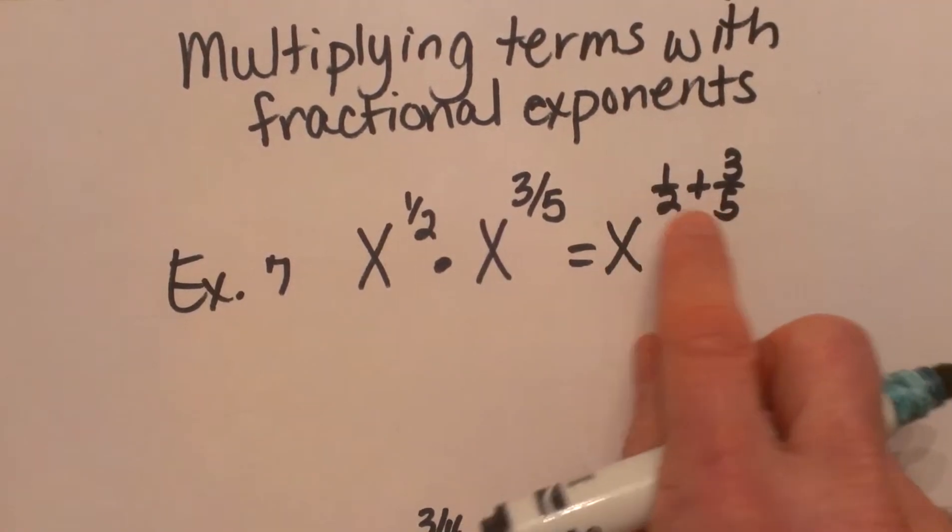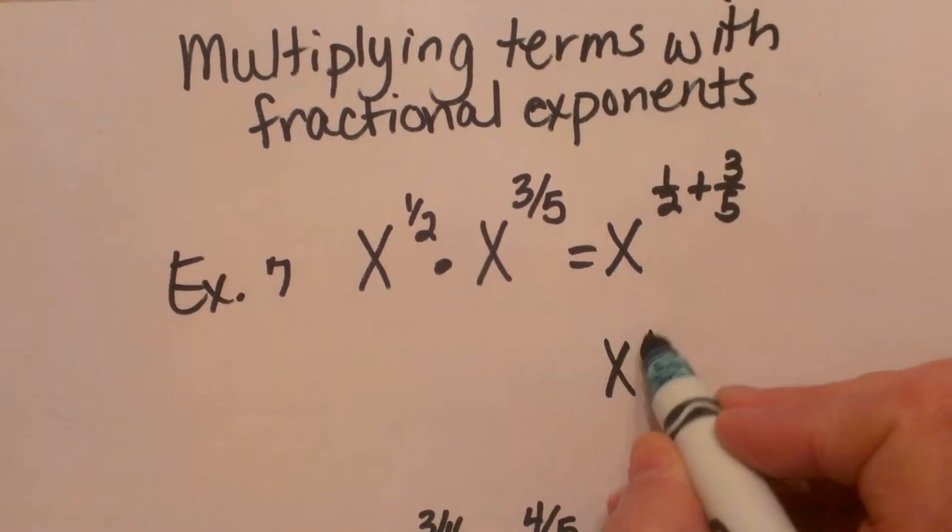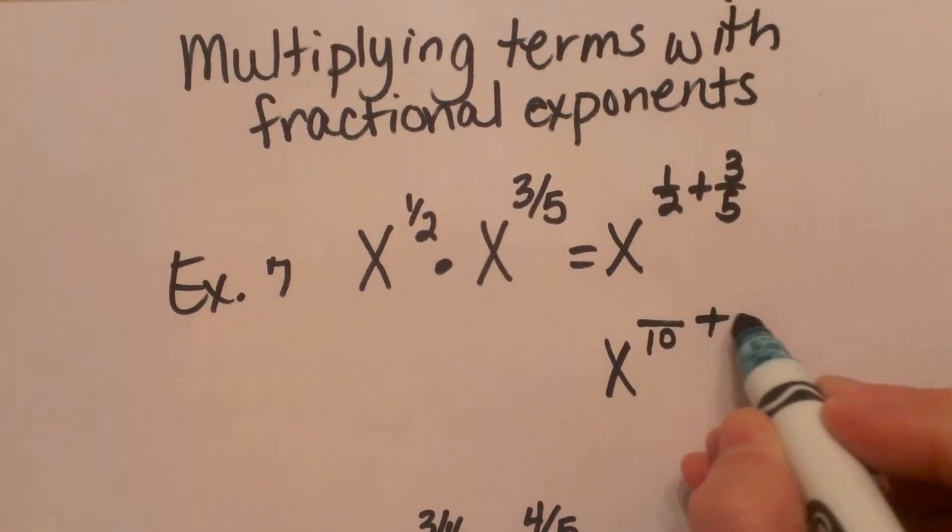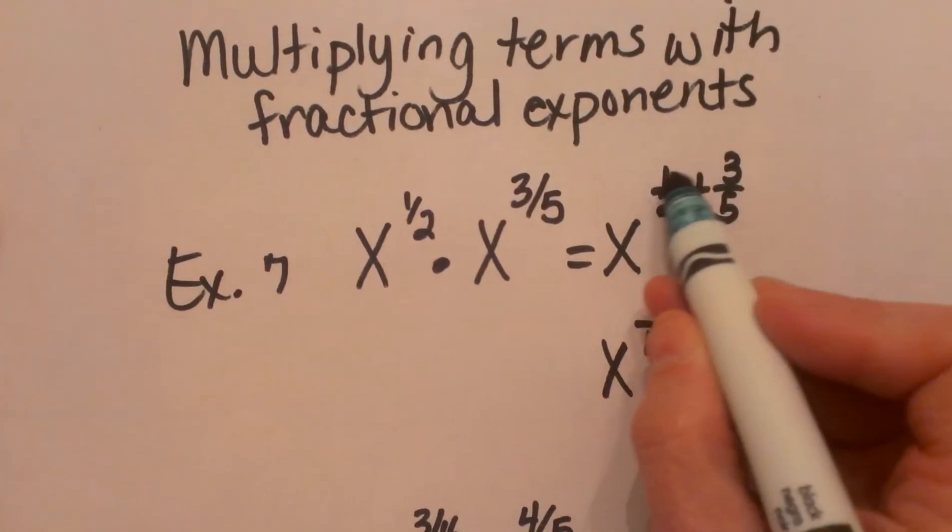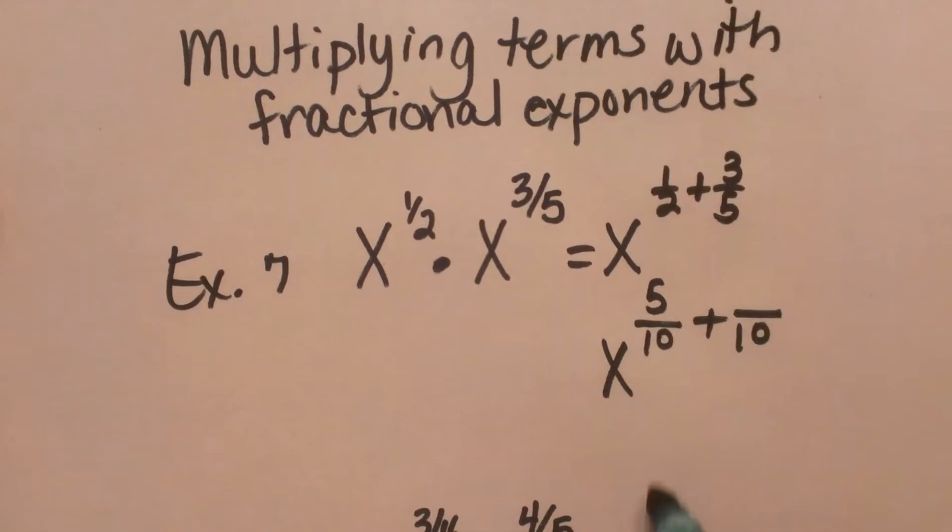Well, 2 and 5 are our denominators, so our common denominator is 10. So let's rewrite these with a 10 in the denominator. So we're going to multiply 1 half by 5 to get 5 tenths.